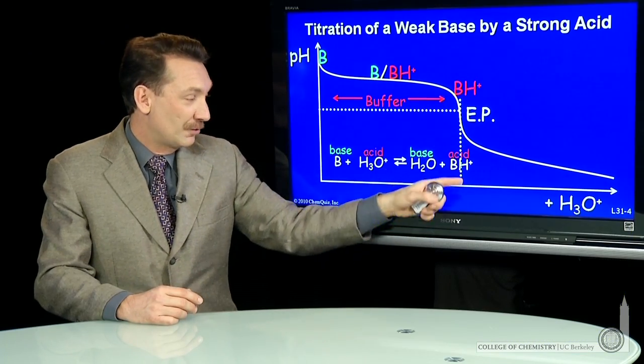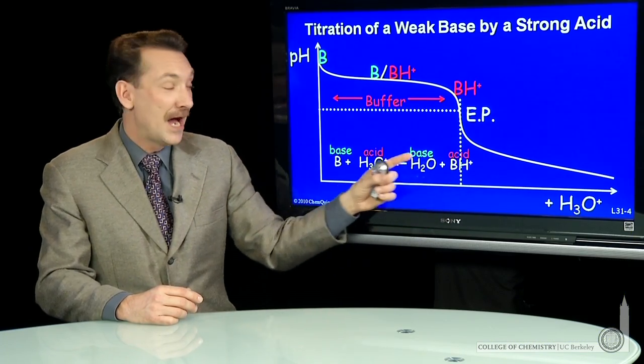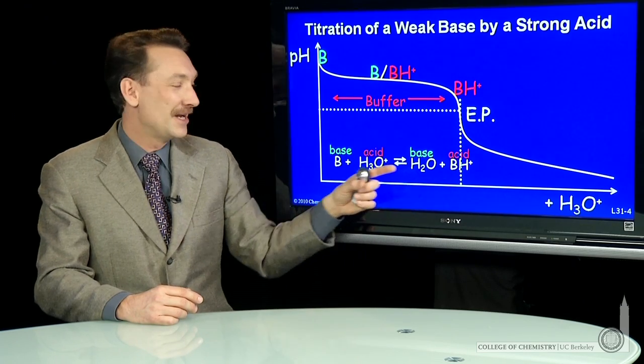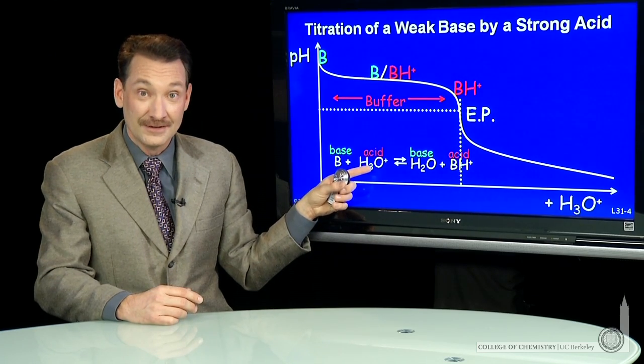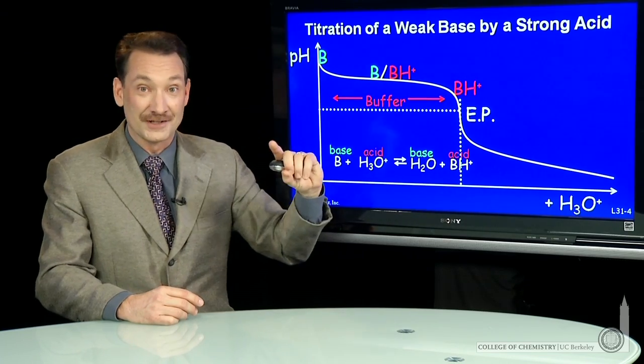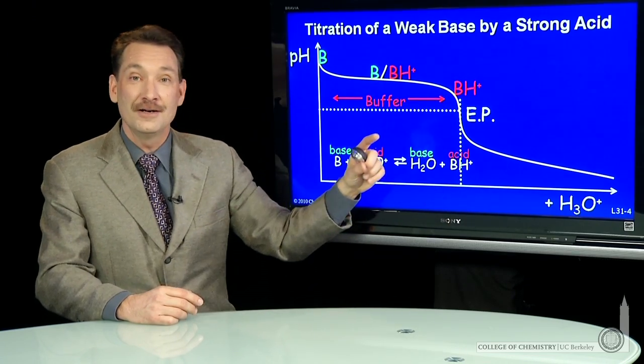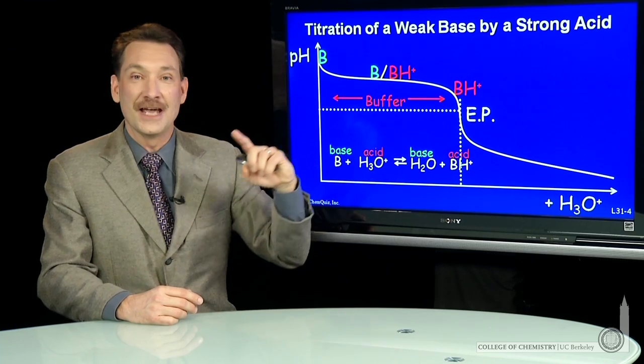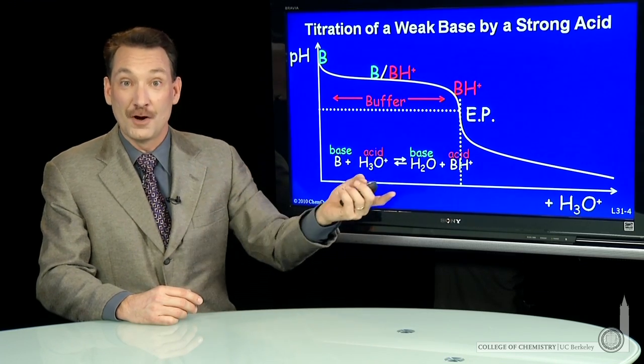When I get to the equivalence point here, now I've converted all my base to the conjugate acid. I've added a mole of strong acid for every mole of base that I originally had, converting it all to its conjugate acid. So you have a solution here of a conjugate acid. You can calculate the pH of a solution of a weak acid.